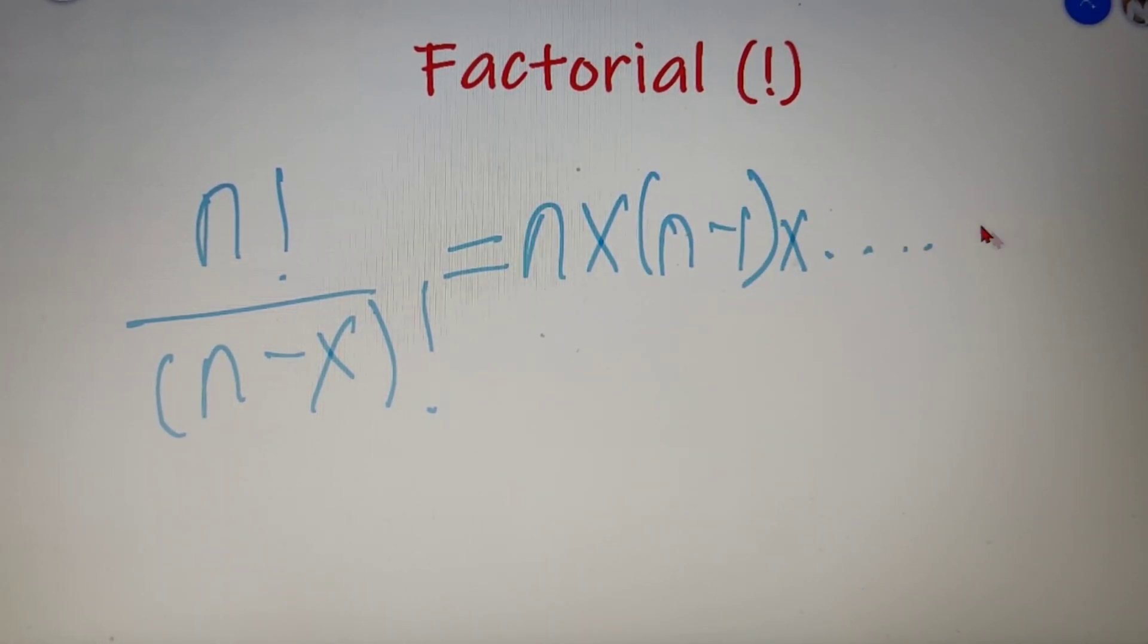So we can generalize the concept that we have just discussed. N factorial divided by n minus x factorial where x is a whole number can be written as n into n minus 1 into all the numbers up to n minus x plus 1.